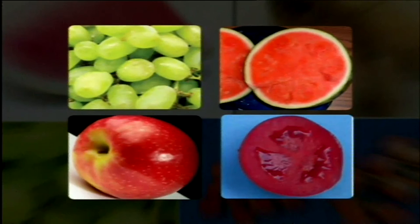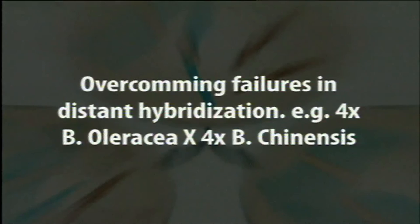Autotetraploids are produced in plants where seed is the economic product, or where larger sized fruits, seeds, or leaves are required. Because of their irregular meiotic behavior, autotetraploids produce seedless fruits, making them useful in plants where seeds are undesirable — for example, grapes, watermelon, apple, and tomato. Autotetraploids are also used in overcoming failures in distant hybridization. Most species cannot cross at diploid level, but their tetraploid counterparts can cross more easily because their gametes and resulting zygotes are chromosomally compatible.